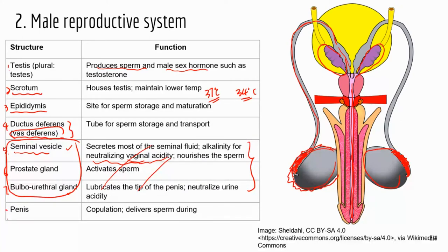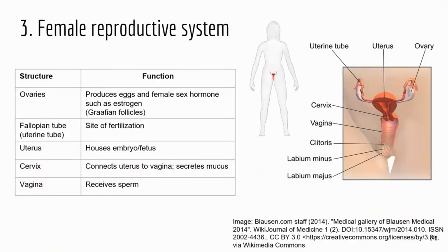The last structure is the penis. The main function is to deliver sperm. Those are the male structures. Now let's look at the female structures.